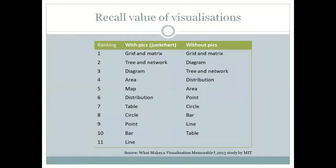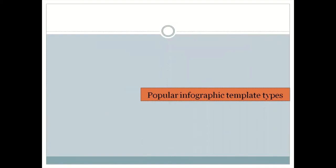This is the list from the MIT study. They made a distinction between visualizations with images — sometimes called 'junk charts' — and ones without images. The top three remain the same regardless: grid matrix, tree and network, and diagrams. Without visual elements, diagrams move up further. Area, distribution, maps, tables, and circles such as pie and donut charts also perform well. Depending on the content you have, try to stick to this ranking.